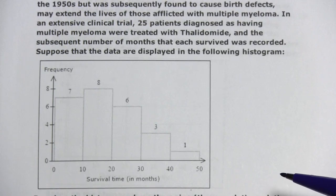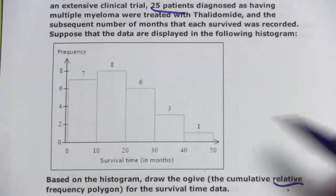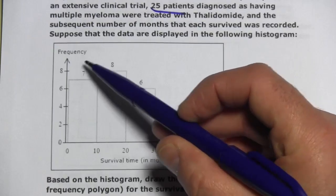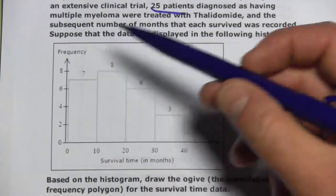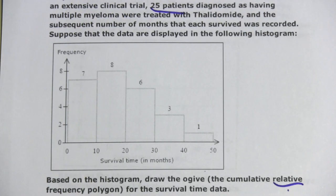There are 25 patients in this sample, and to find out the relative frequency, the frequency on this first range is 7. To find out the relative frequency, you're just going to divide by the sample size. So 7 divided by 25, that's 0.28.